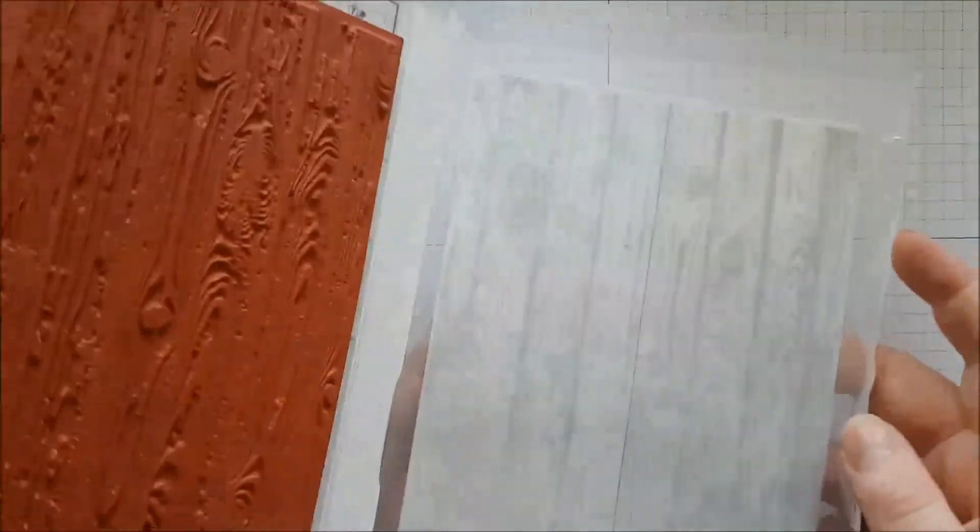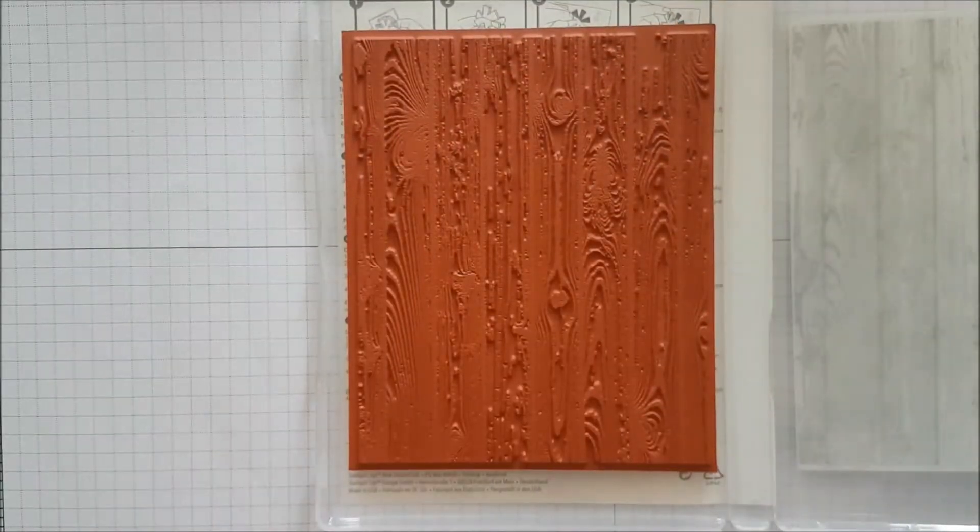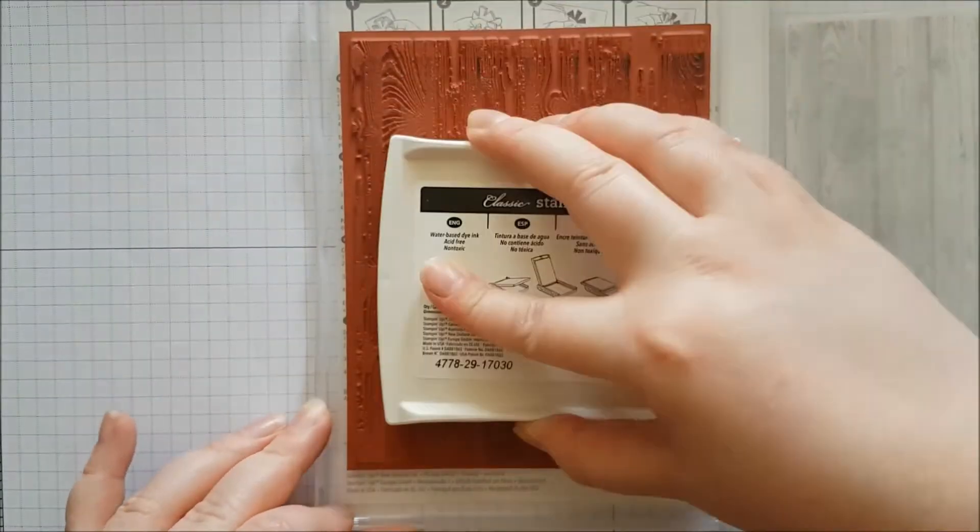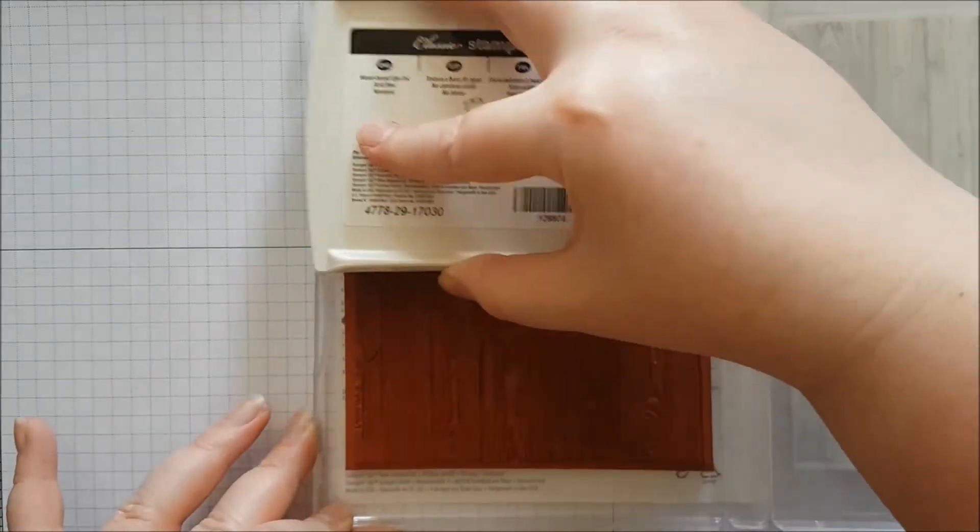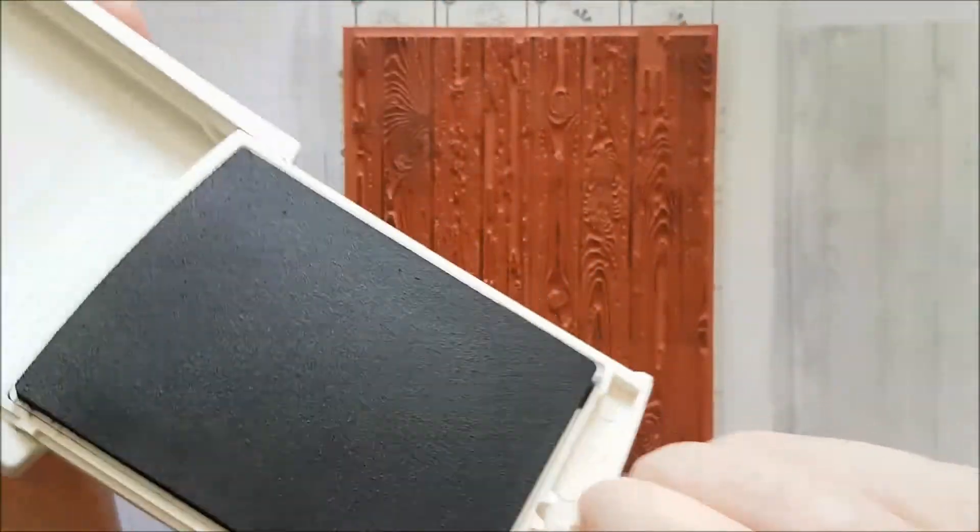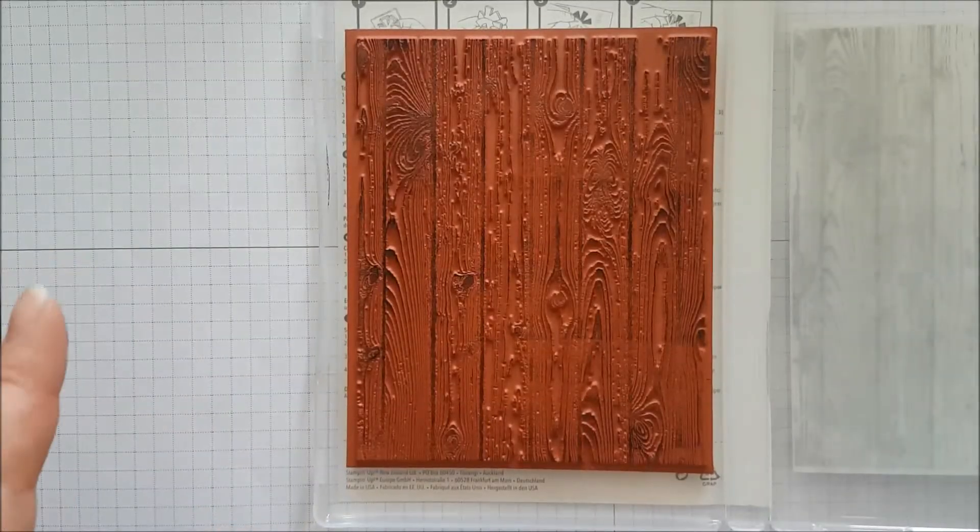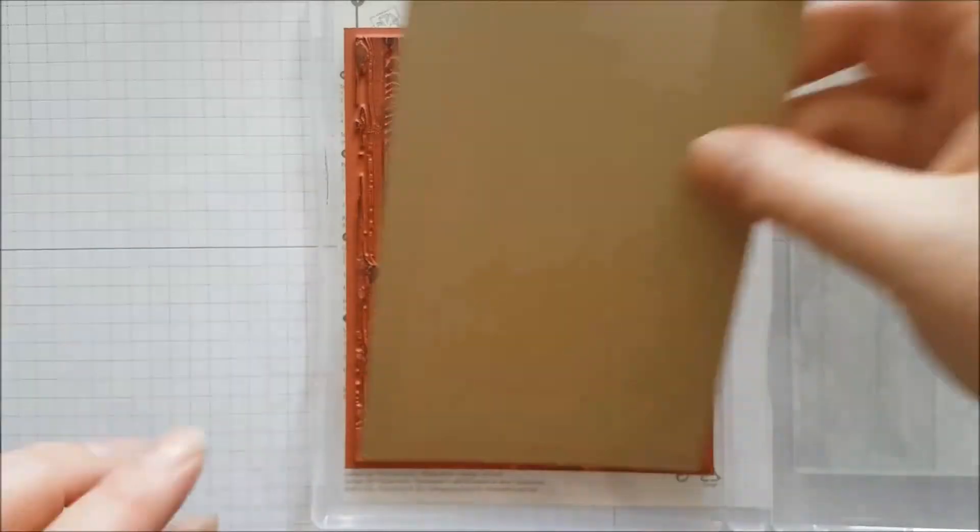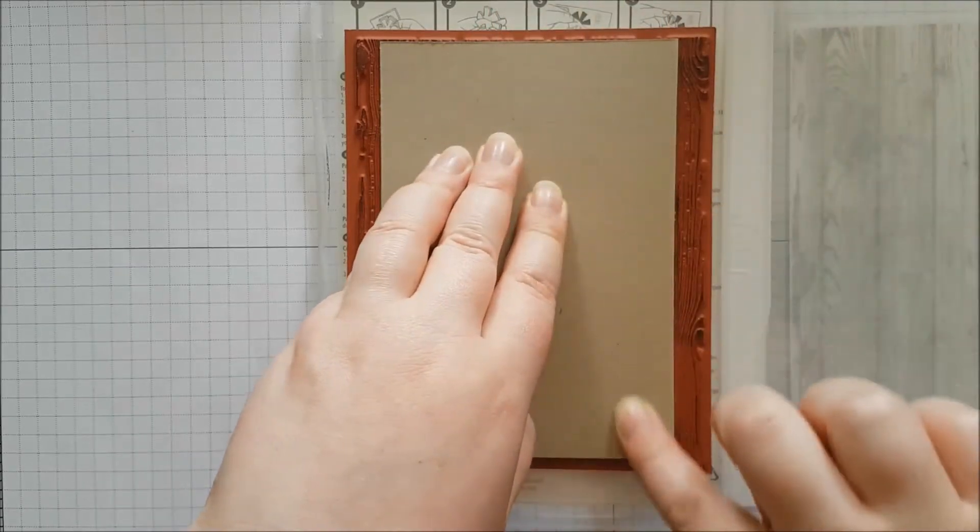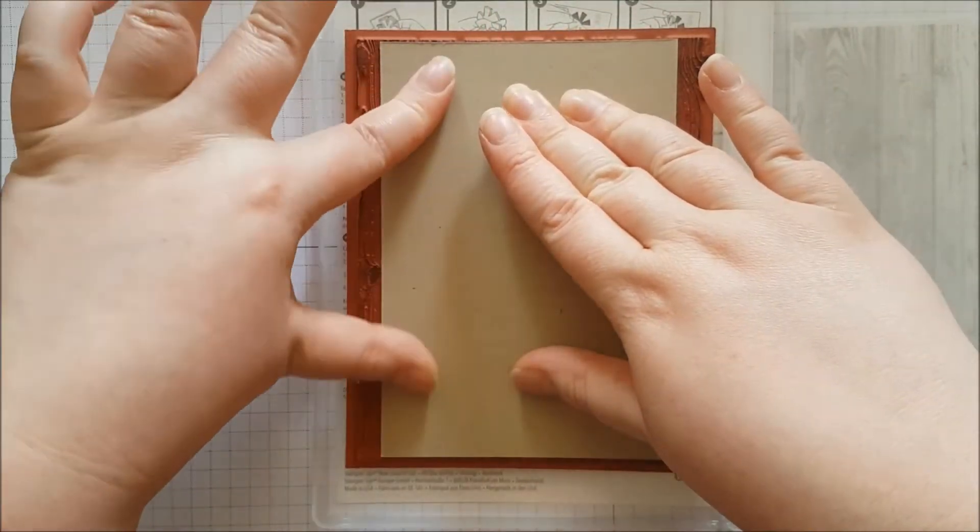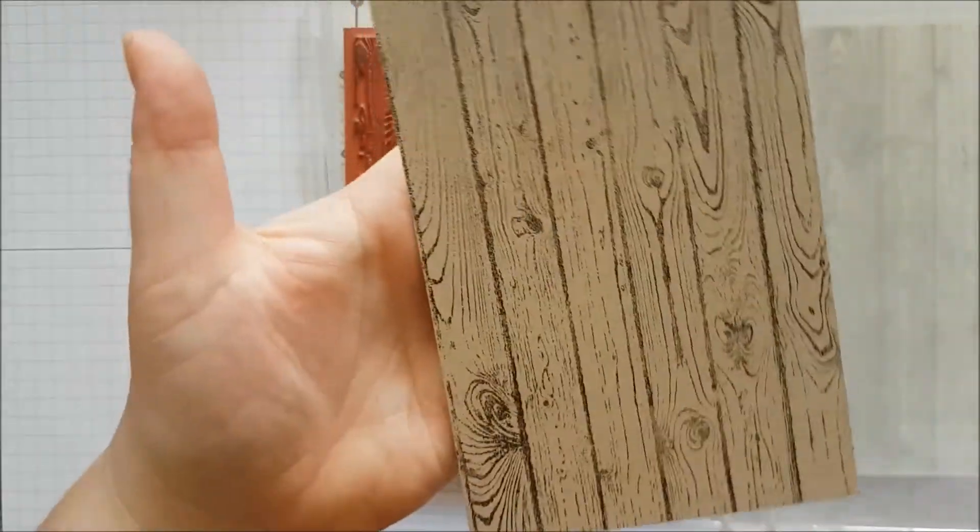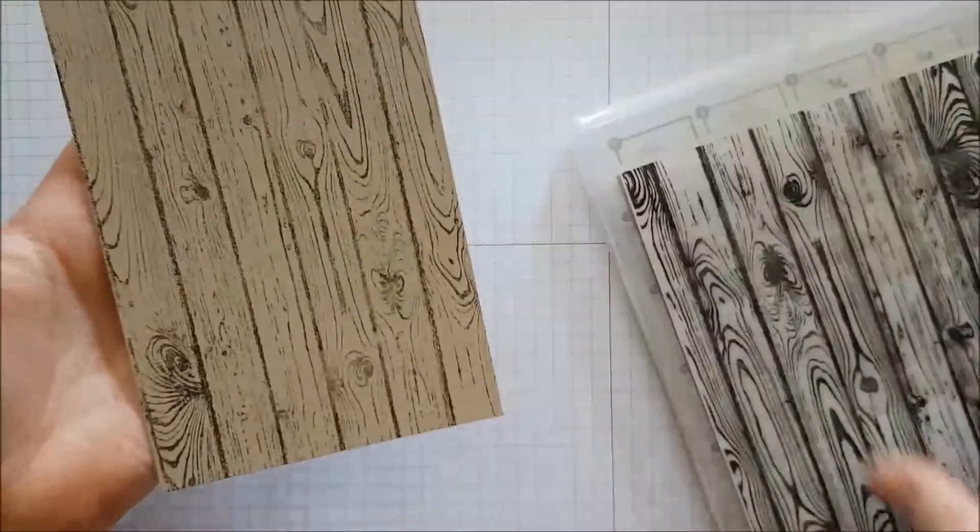To start with I'm going to use the background stamp, the Hardwood background stamp, and I'm going to get some Early Espresso and just ink that up. It doesn't have to be perfect, it just gives that nice wood grain effect to the card. So if there are patches missing it doesn't matter, that could just be part of the design. So I'm going to place that down. And that is your background.